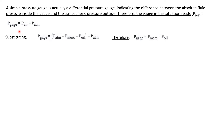We can substitute our earlier expression for P_air — which was P_atmosphere plus P_mercury minus P_oil — into the gauge pressure equation, then subtract P_atmosphere. The atmospheric pressure terms cancel, and so the gauge reading equals P_mercury minus P_oil.